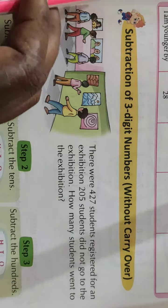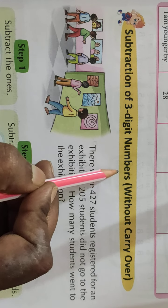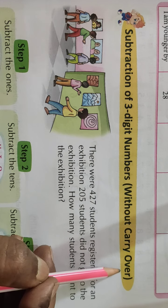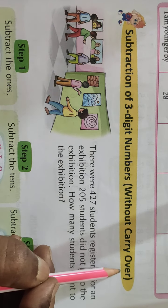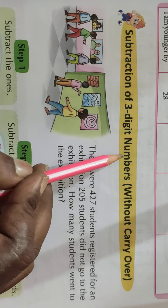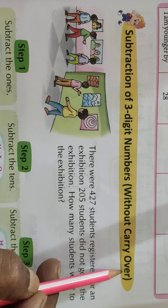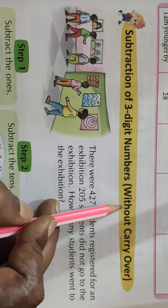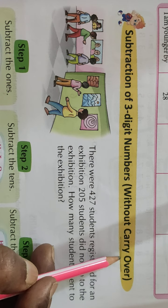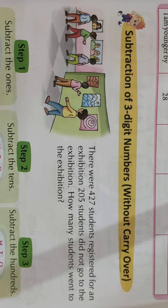See — subtraction of 3-digit numbers without carry-over. Means आपको 3-digit numbers का subtraction करना है जिसमें carry नहीं लेना है. Without means — के बिना, means carry माँगनी नहीं होगी. Let's understand.